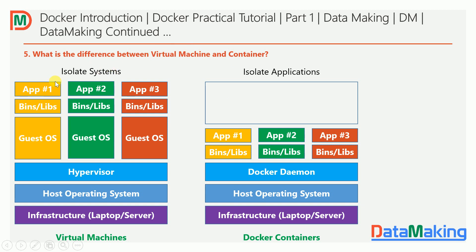In a typical virtual machine architecture you have infrastructure, a host operating system, and then a hypervisor virtualization layer with different guest operating systems — each with its own root permissions and other components, so the systems are isolated. With Docker containers, you also have infrastructure, a host operating system, but instead of a hypervisor you have the Docker Daemon, which is the Docker Engine. It hosts application one as one container, application two as another container, and application three as another container. All three containers have their own set of libraries and binaries, so there is no runtime environment mismatch — everything is isolated per application.